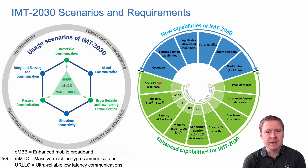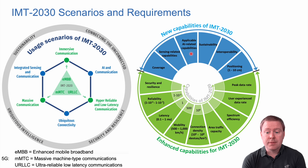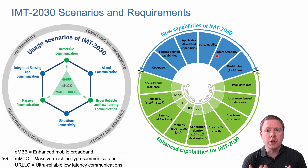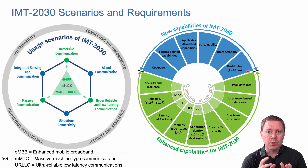When it comes to new capabilities, there will be targets on coverage, sensing-related capabilities related to integrated sensing and communications, applicable AI-related capabilities, sustainability, interoperability — so that not only mobile phones and infrastructure can talk to each other, but cellular networks can be built using different infrastructure components from different companies, which is also called Open RAN — and finally positioning, using radio signals to detect where devices are located.